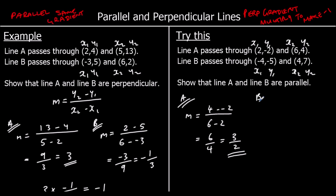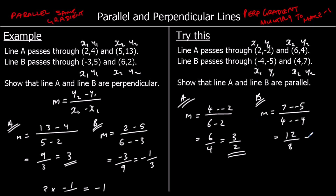For line B: 7 minus negative 5, over 4 minus negative 4. So we've got 7 plus 5, which is 12, over 4 plus 4, which is 8. They're both in the 4 times table, so it's 3 over 2. We wanted to show they're parallel — they've got the same gradient, so they are parallel.